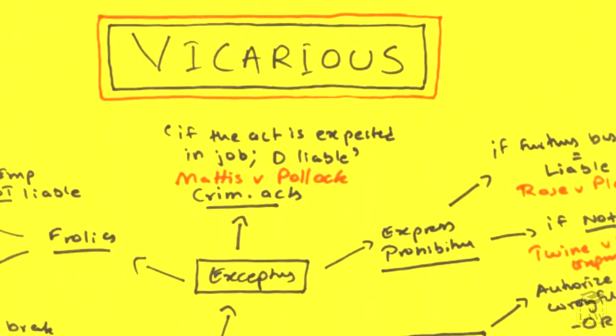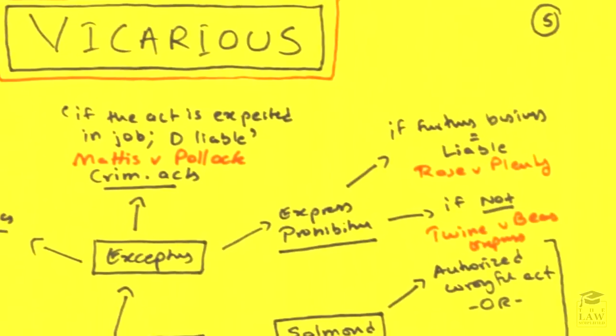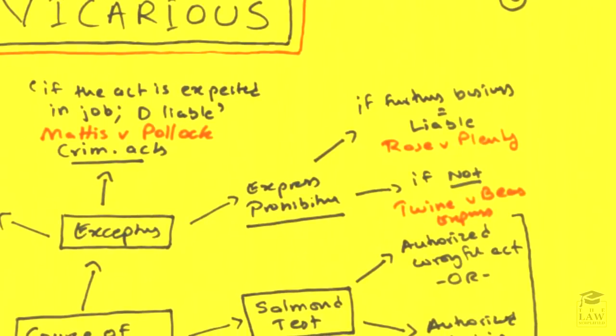As always, there are a couple of exceptions to consider. First of all, if the act committed by the employee was expected as part of the job — as in Mattis and Pollock — then the defendant employer will be liable. Have a look at Mattis and Pollock; it is an interesting case relating to a club, and you will understand why the sort of criminal act involved was expected as part of the defendant's job.